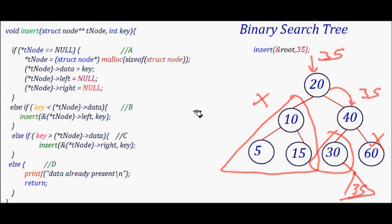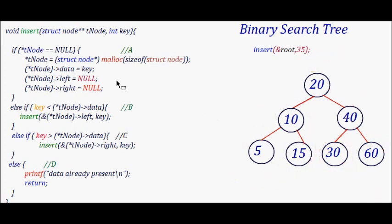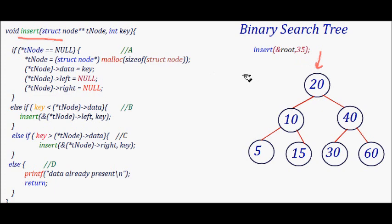Now how do we instruct the computer to do this in code? We have an insert function with two parameters: struct node double-pointer T node (the address of the root node) and the key to insert. We need a double pointer because whenever we pass an argument to a function and want to change it, we need a pointer to it. Since the node itself is already a pointer, we pass a pointer to a pointer to modify the tree. We call insert with the address of root and key 35.